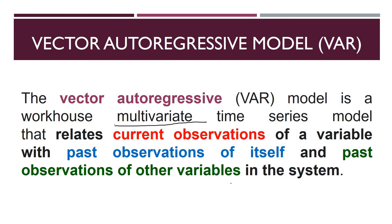For example, with two variables X and Y, there should be a bi-directional relationship: X affects Y and Y affects X. In the VAR model, today's value of Y depends on yesterday's value of Y as well as yesterday's value of X. So to predict a variable, it depends on the past observations of itself and past observations of the other variable.